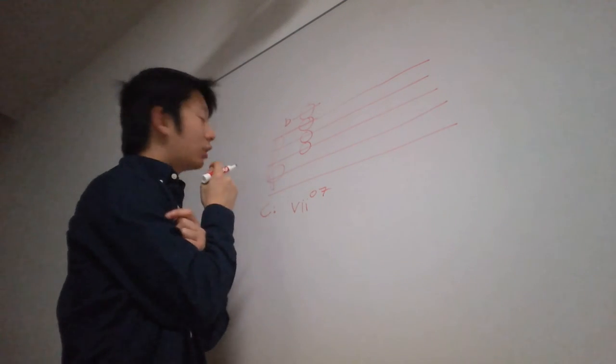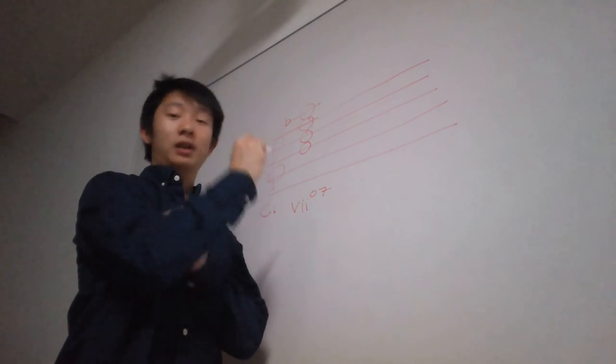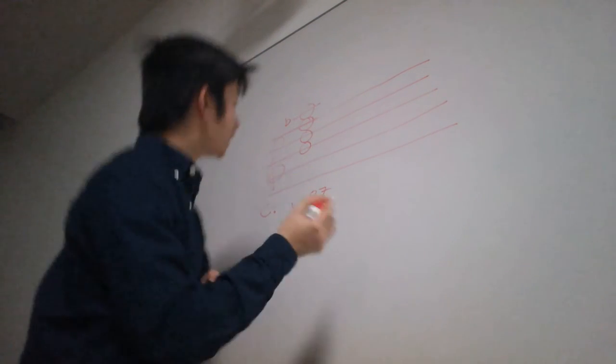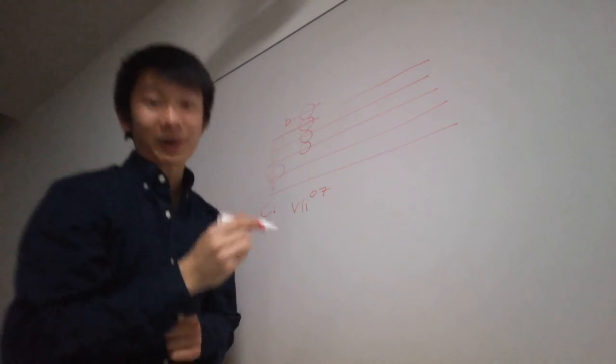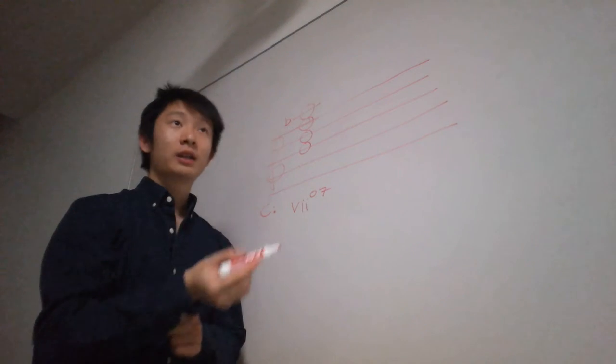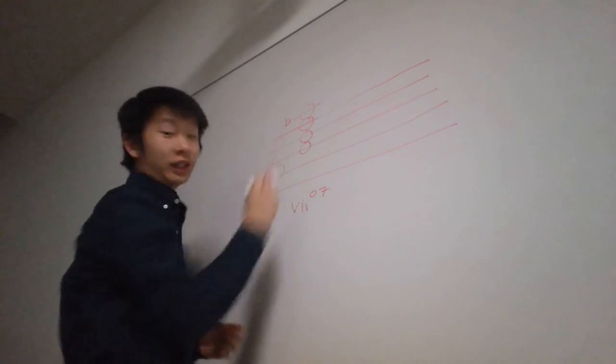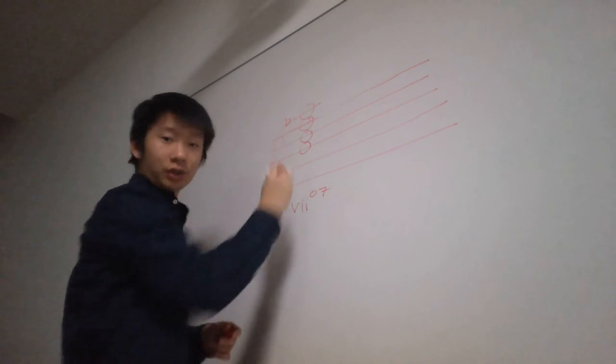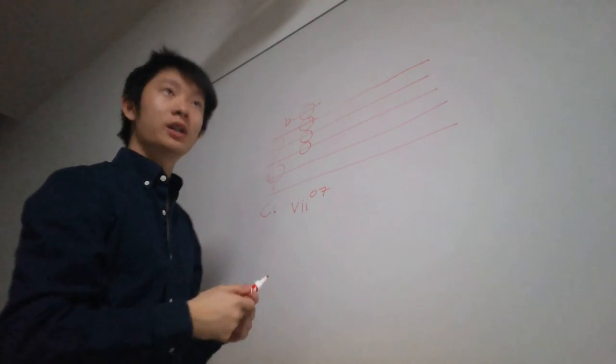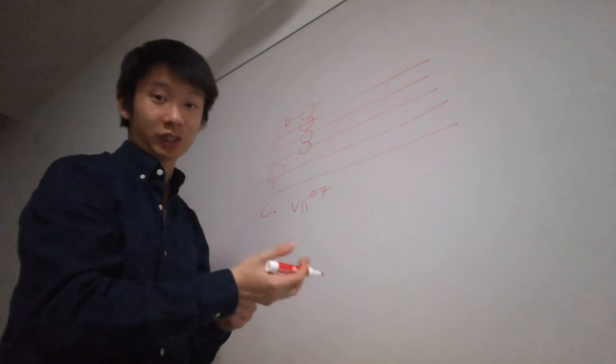And so to use a diminished chord to modulate into a key, we have to understand that each of these chord members can move by half step up to a new key center. To restate that in different words, each of these chord members are leading tones. Because they are leading tones, you can move upwards by half step to reach a new key center.